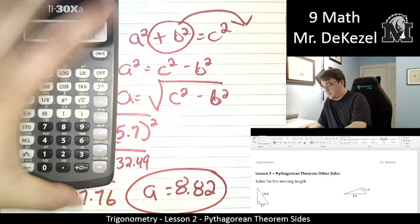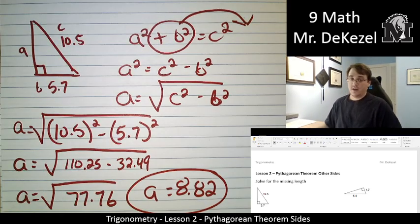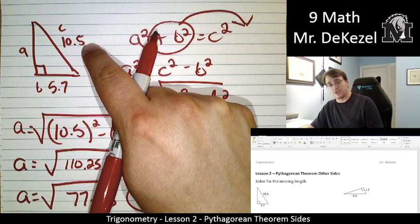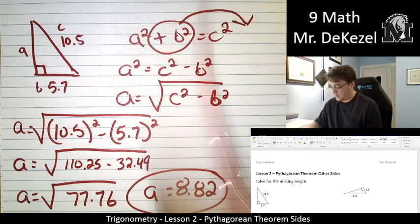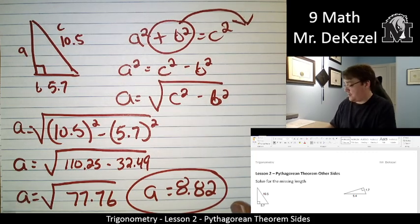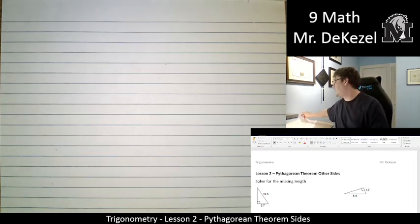One or two decimal places doesn't really matter. And that makes sense. It is not the longest side, so it shouldn't be the longest. It could be the shortest, but it cannot be the longest. This makes sense for an answer for that problem. It's not like a million. I don't think we made any mistakes. Let's go to the next one.